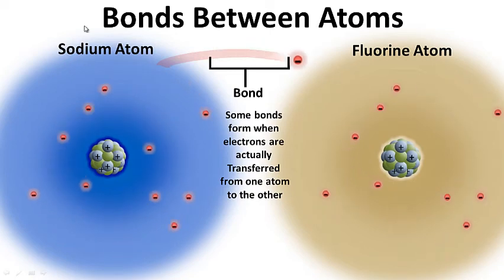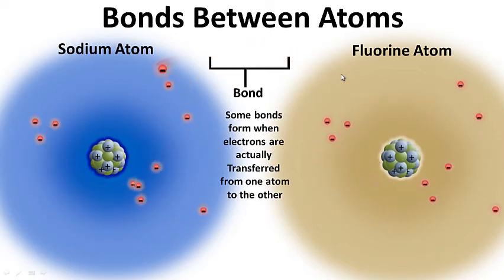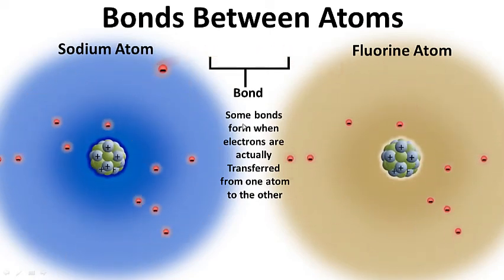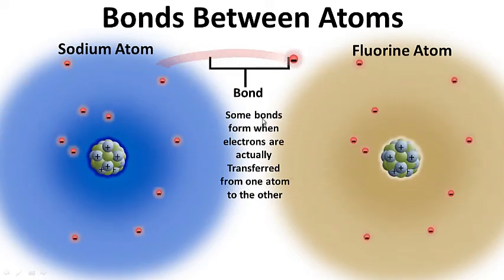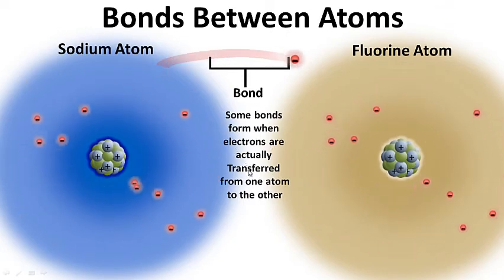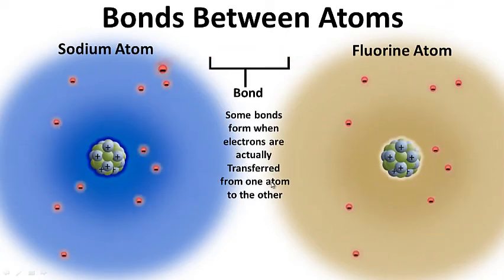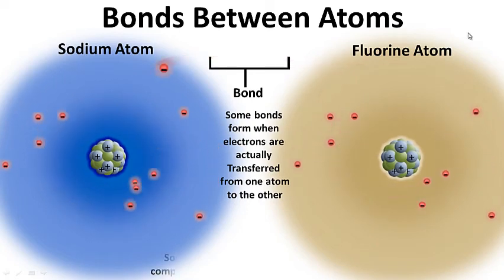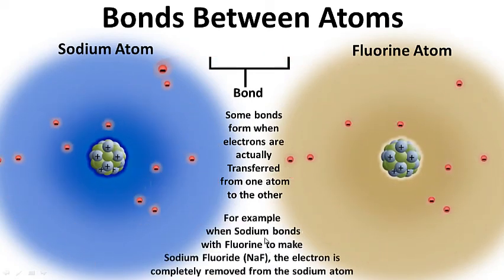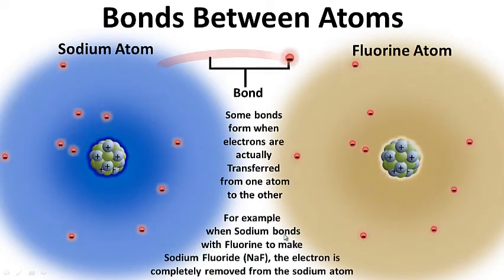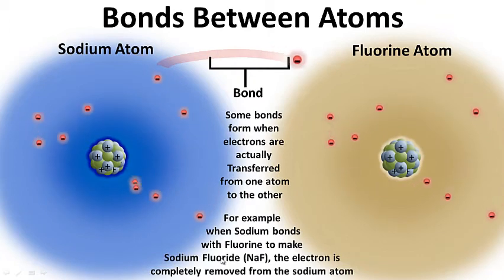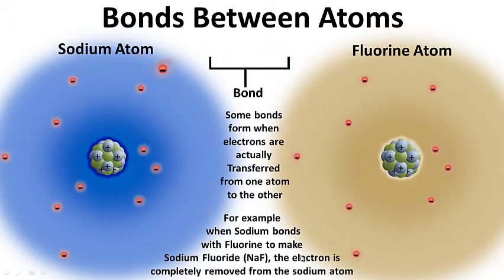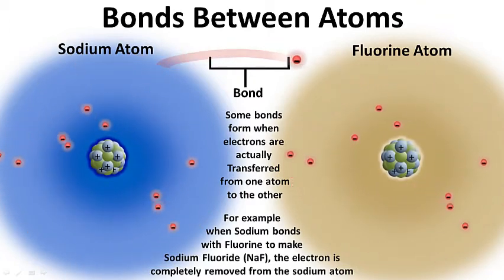Consider the bond that forms between a sodium atom and a fluorine atom. Some bonds form when electrons are actually transferred from one atom to the other. In the case of sodium and fluorine, when sodium bonds with fluorine to make sodium fluoride, the electron is completely removed from the sodium atom.